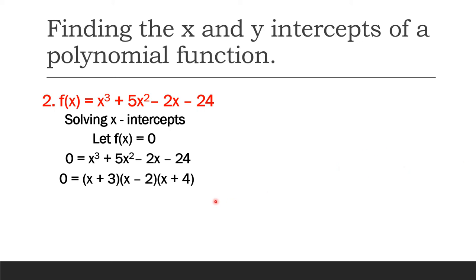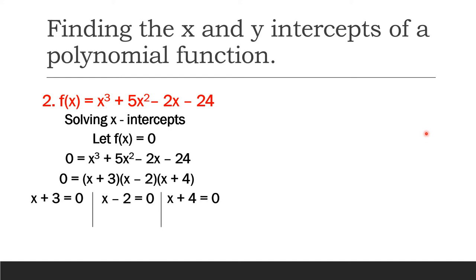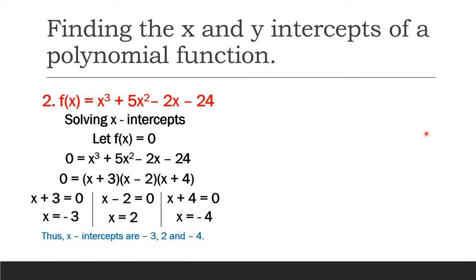We equate all the factors to 0. For x + 3 = 0, x equals negative 3. For x - 2 = 0, x equals 2. For x + 4 = 0, x equals negative 4. Thus, the x intercepts of this polynomial function are negative 3, 2, and negative 4. Now let's proceed to solving the y intercept.